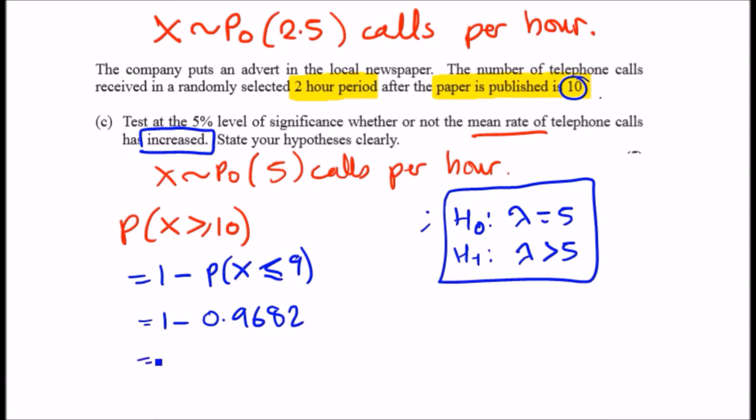This already looks less than 5% to me. I already know what the statement is. So we got 0.318 - oh, that would be a fatal error - 0.0318.